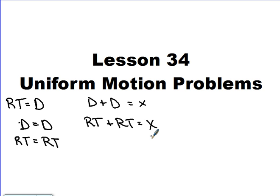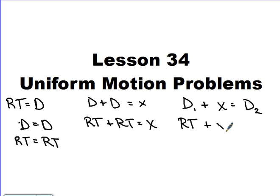Today we're going to talk about a situation where the distance of one person plus an unknown distance equals the distance of the second person. An example would be someone chasing someone else who hasn't quite caught up, or people who left from two different places a certain distance apart. The equation becomes: rate times time plus a distance equals rate times time.